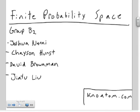Welcome to another KnowAdam.com video. We are group B2 and we will be going over finite probability space today. I'm Josh Nani, the other group members are Chase and Hurst, David Browman, and Shatu Liu.